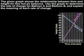The given graph shows the relationship between time and height for two hot air balloons. Use the graph to determine the rate of change for balloon A and balloon B, and explain the meaning of each rate of change.